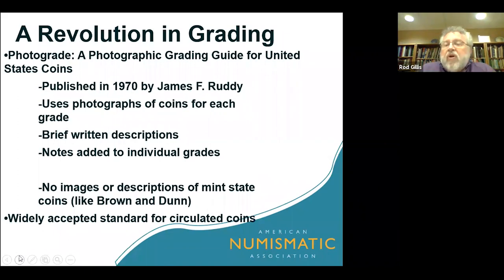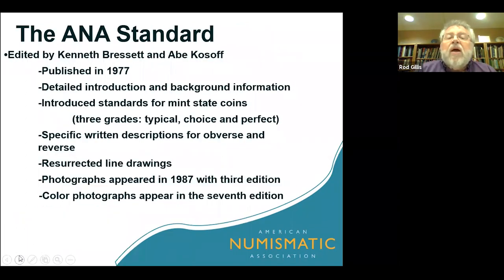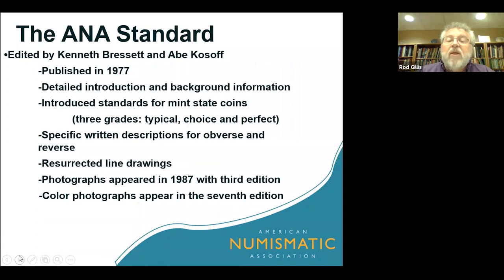Then Photo Grade came out — the 'Photographic Grading Guide for United States Coins,' published by James Ruddy, using photographs of coins for each grade with brief written descriptions. No images or descriptions of mint state coins existed there, but it was the widely accepted standard for all circulated coins. Then Ken Bressett and Abe Kossoff in 1977 published a detailed introduction with standards for mint state coins, specific written descriptions for obverse and reverse, and resurrected line drawings. Photographs appeared in the 1987 third edition, and color photographs in the seventh edition — the book we're talking about is the ANA Grading Standards book.